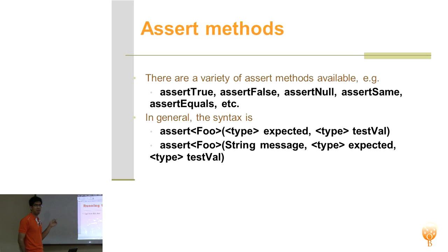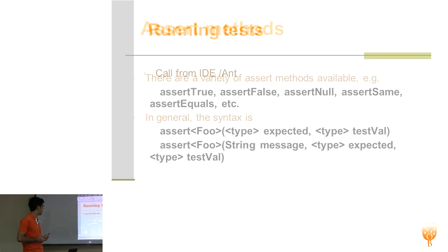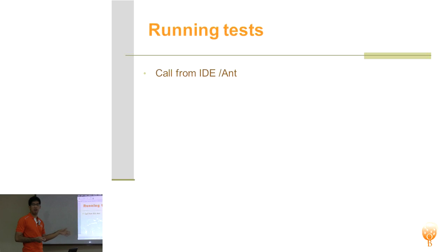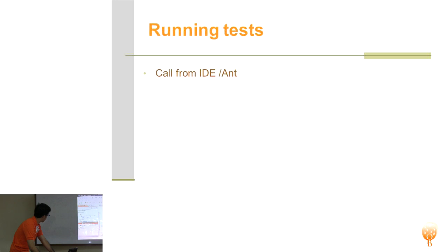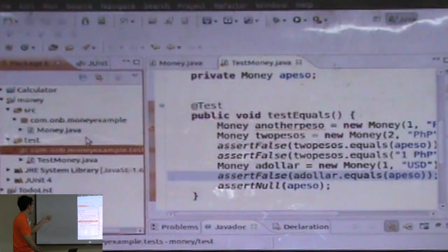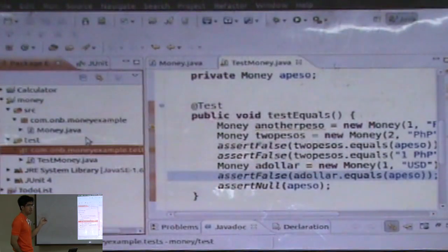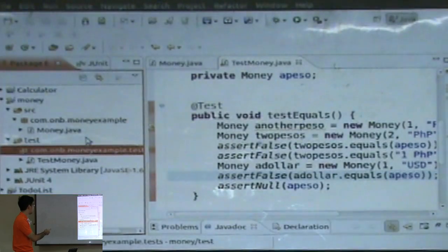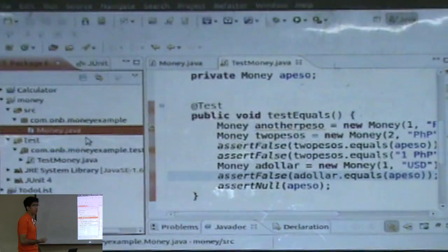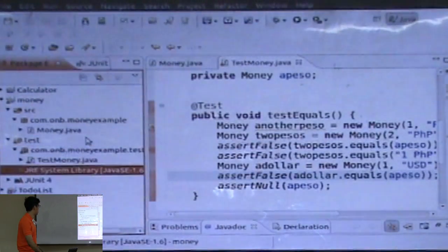You can call tests from your IDE like Eclipse, or use scripts to call them automatically from the command line. There are two common ways of structuring your projects. The way we generally do it is you create a new source folder called test and put all your tests in package names that match what they're testing, adding dot test. So I'm testing my money example package in com.onb.moneyexample.test, and I created a test suite called test money.